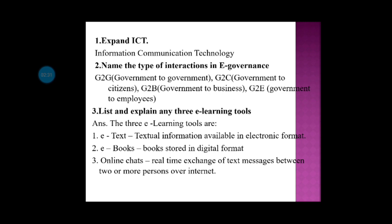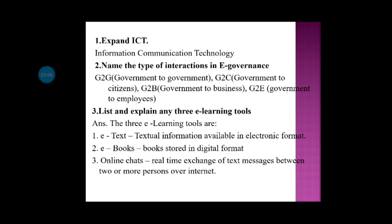There are four types of interactions in e-governance and three types of e-learning tools. The three e-learning tools are: e-text, e-book, and online chat. E-text is textual information in electronic format. An e-book is a book in digital format. Online chat is communication via text messages.